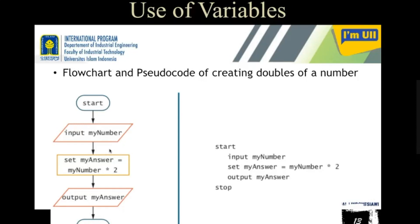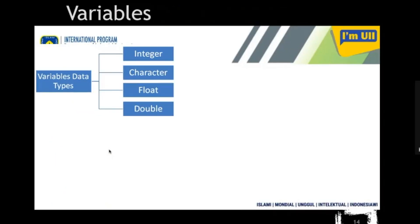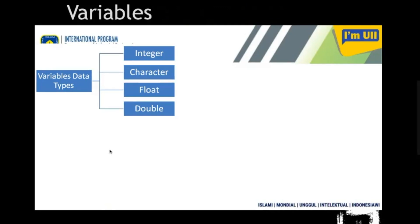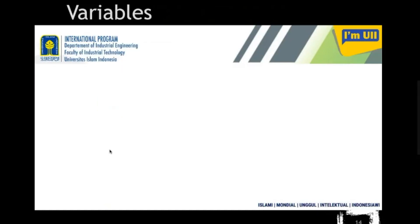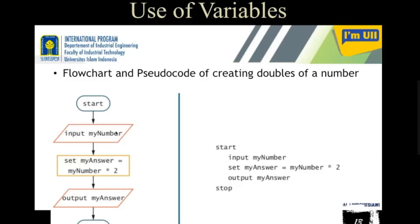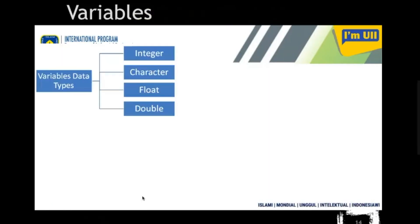So 'my number', 'my answer' — in programming these are called variables. These variables have different classifications. One way to classify variables is based on their data type — what kind of data they are actually storing. For example, if 'my number' stores an integer value, a floating value, or a character value, then accordingly a variable is called an integer variable, character variable, float variable, or double variable.